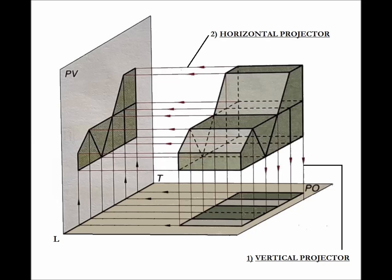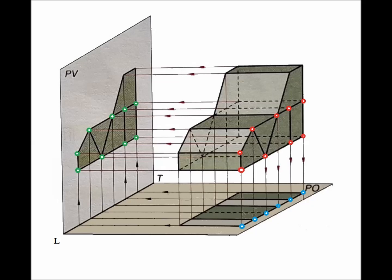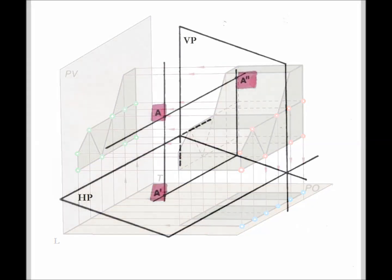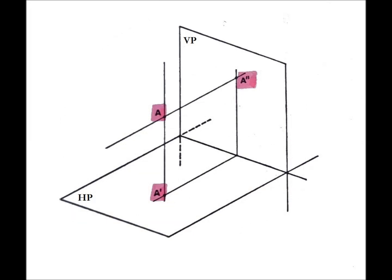The object is represented on these two planes through two lines, called projectors, that project the object perpendicularly to the planes from each vertex. This explains the name of this representation technique, orthographic projection. On the two representation planes, the object is projected through its vertices, and therefore by points. The orthographic projection of a point on a plane is defined as the foot of the perpendicular drawn from the point to the plane.